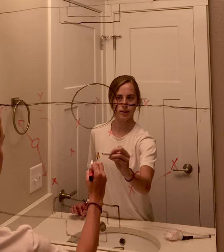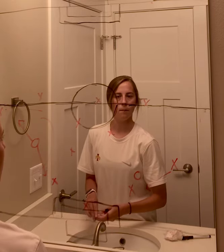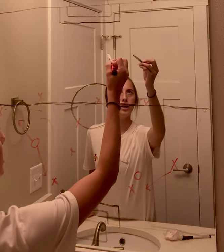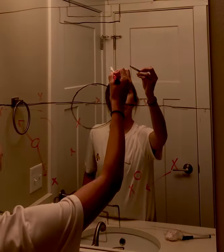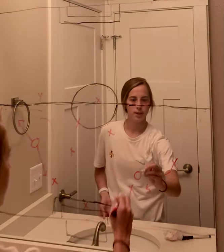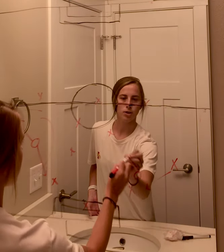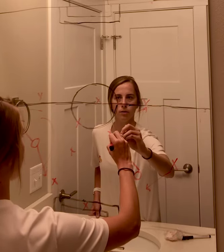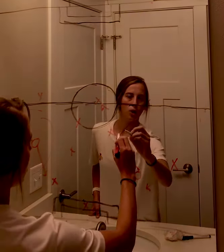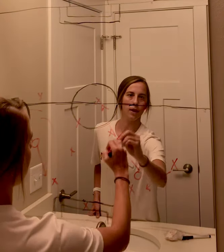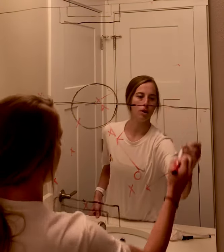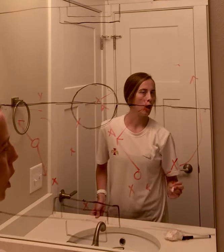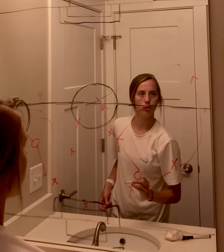We can progress through our defensive third up into our middle third and lastly to our attacking third, where we hopefully can create a quality goal scoring opportunity. Let's say our center back finds our defensive midfielder, who could either find our forward or our attacking midfielder, and then one of these players could play a ball through to our right outside back, who is getting involved in the attack and providing width and numbers for our team.